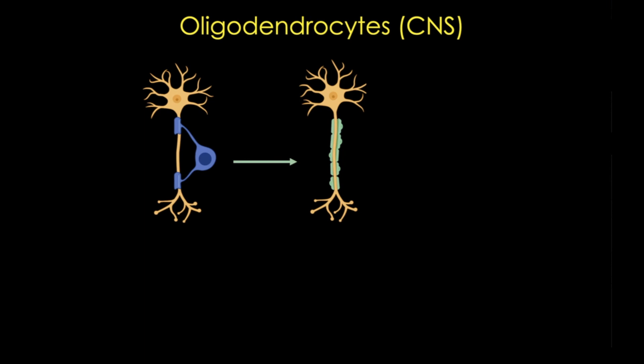And so myelin is a lot like insulation on a wire, and the structure of the myelination allows rapid saltatory conduction of an action potential.